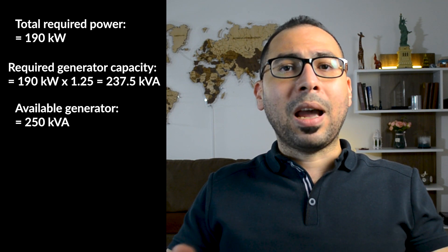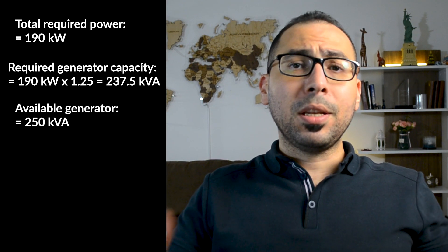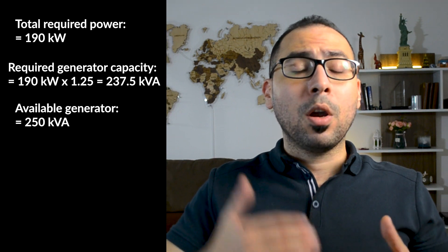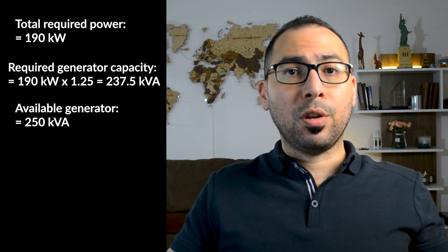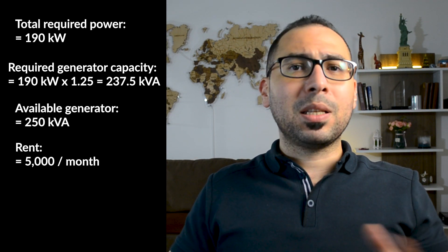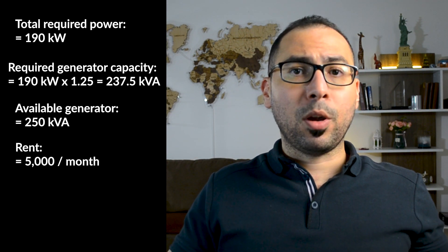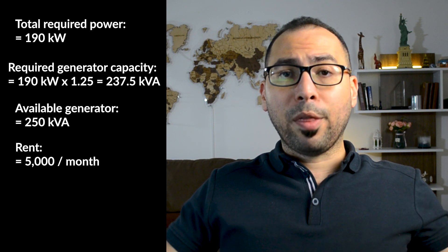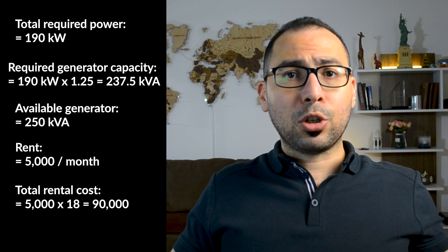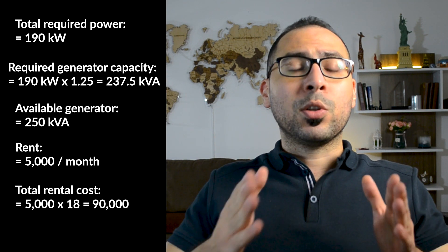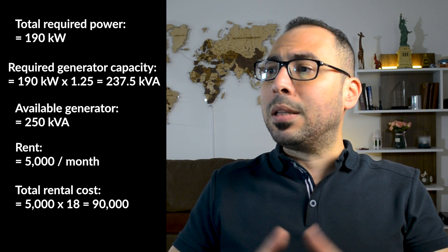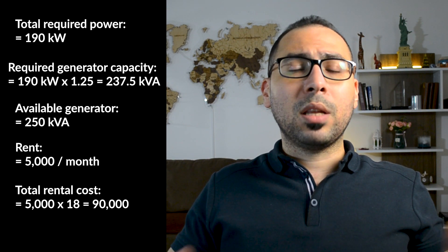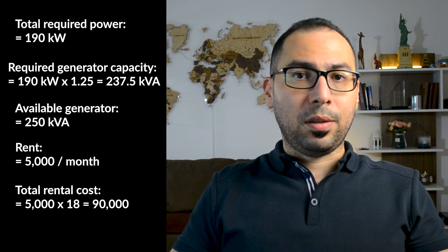Since I need 237 kVA, I'll go for a 250 kVA generator and rent it. Now I need to see how much the rental cost is. Let's assume it's 5,000 per month. If I need this generator for 18 months — the duration of the project — that's 5,000 multiplied by 18, which equals 90,000 just for the generator rental.